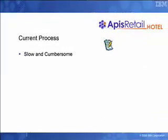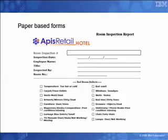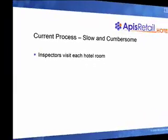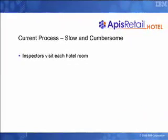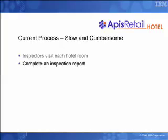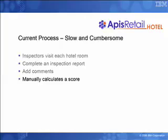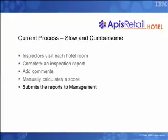Currently at the hotel, quality assurance is accomplished through a series of inspections that are typically done by various individuals equipped with clipboards, paper checklists and pens. After cleaning staff is done, inspectors visit each hotel room at a site, complete a detailed inspection sheet, add written comments, and then manually calculate a score. Reports are shared with management and related plans and budgetary and maintenance decisions are made based on documented findings.